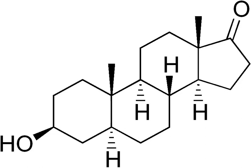Epiandrosterone, or isoandrosterone, also known as 3-beta-androsterone, 3-beta-hydroxy-5-alpha-androstan-17-one, or 5-alpha-androstan-3-beta-ol-17-one, is a steroid hormone with weak androgenic activity. It is a metabolite of testosterone and dihydrotestosterone (DHT).